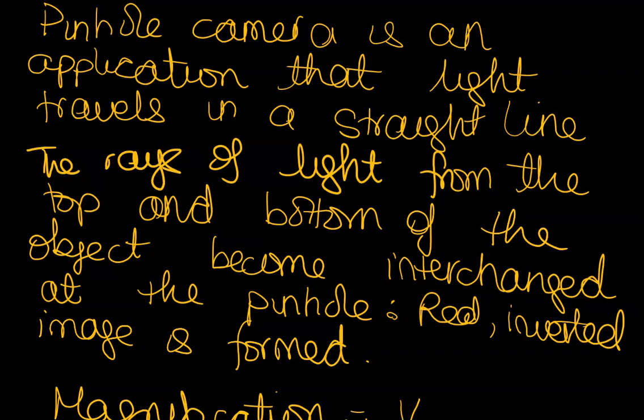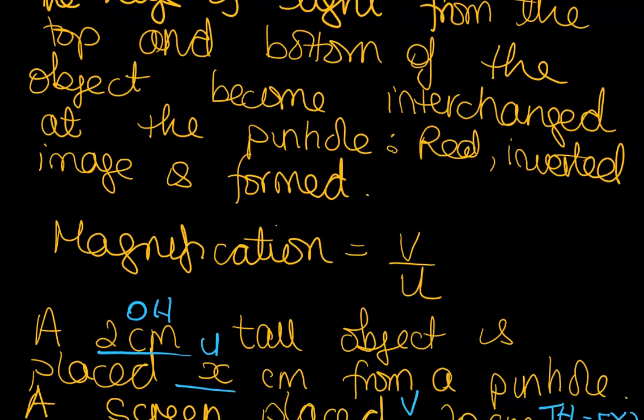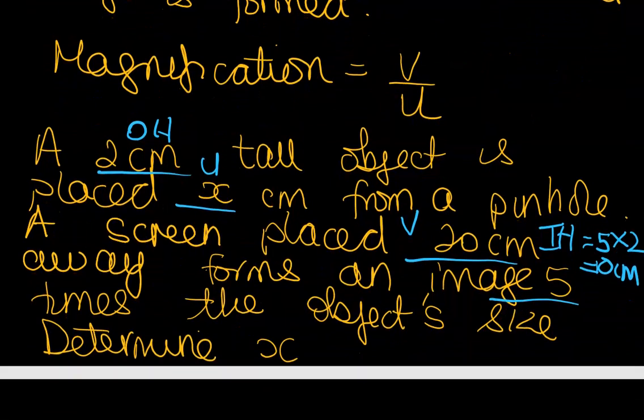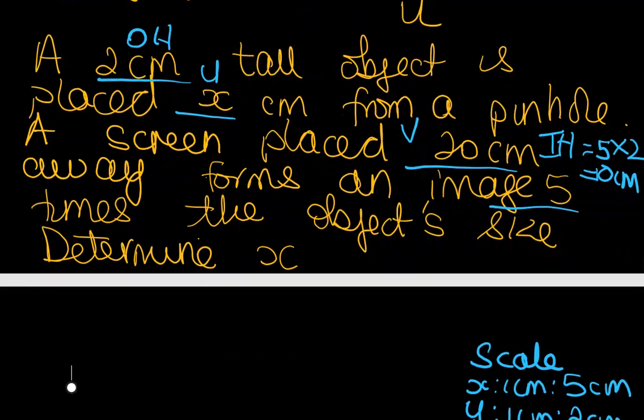Let's look at the question. A 2cm tall object, I use my symbol OH to represent object height, is placed a distance X from a pinhole. A screen is placed 20cm away. The screen is typically where your image is formed. This distance from the pinhole to the screen is V. The image is five times the object size, and we want to determine X.